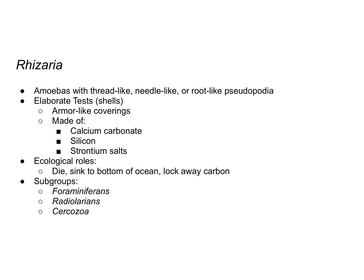In this case, the amoebas have thread-like, needle-like, or root-like pseudopodia. Previously, the pseudopodia we talked about were more of a lobe-like, cytoplasmic extension. With Rhizaria, you have the cell, but the pseudopodia are sharper — more of these needle-like projections.